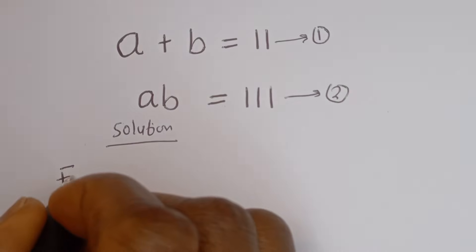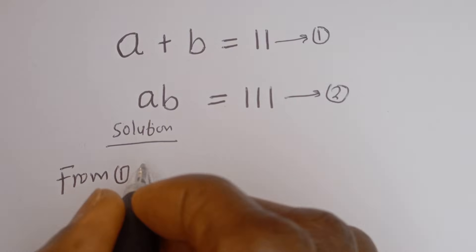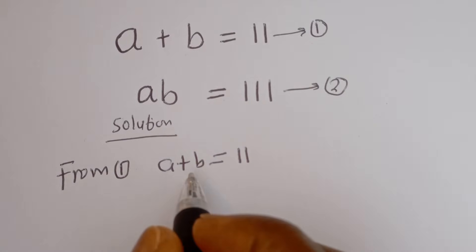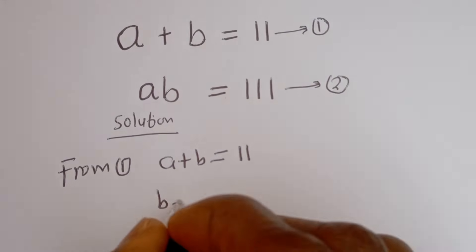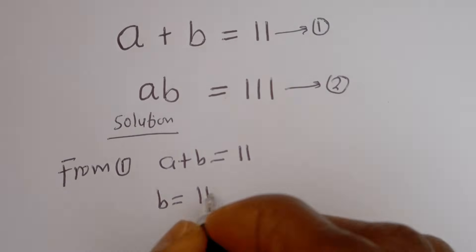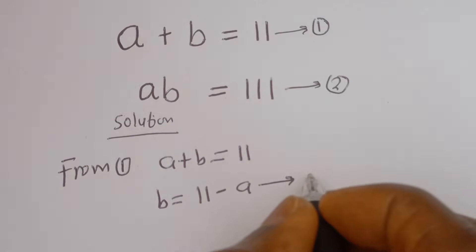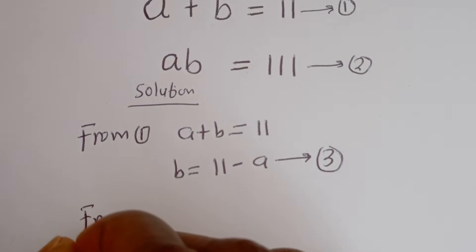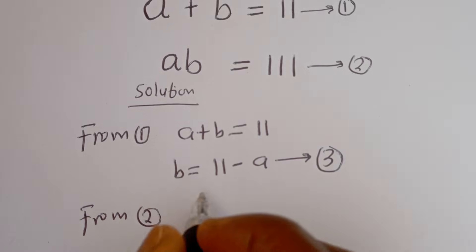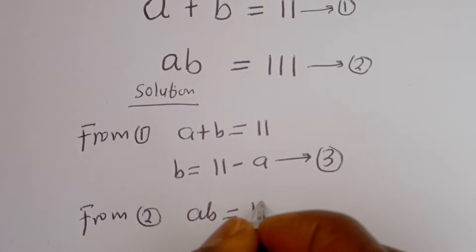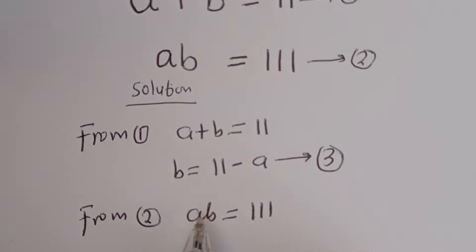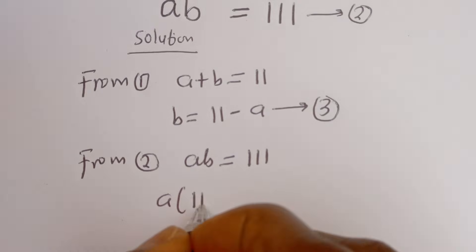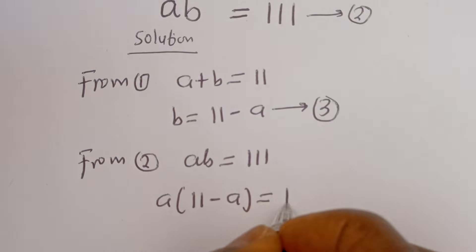From equation 1, A plus B is equal to 11. Let's make B the subject of the formula: B is equal to 11 minus A, let's call this equation 3. Also from equation 2, AB is equal to 111. Now let's substitute for B: we have A times (11 minus A) is equal to 111.